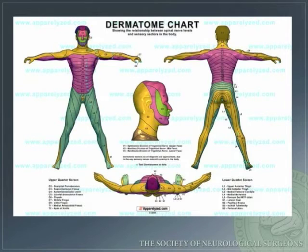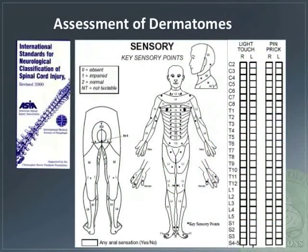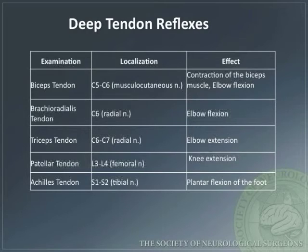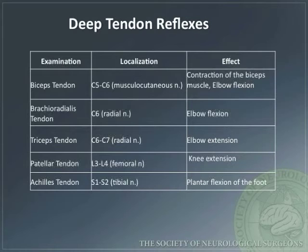Sensation is tested via dermatomes. A diagram shows the dermatomal distribution, and another diagram shows the clinically relevant dermatomes for each nerve root. Deep tendon reflexes may be tested to localize lesions within the nervous system, and a chart shows each DTR, their localization, and their effect upon stimulation.